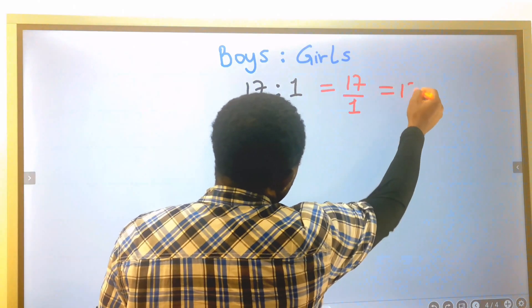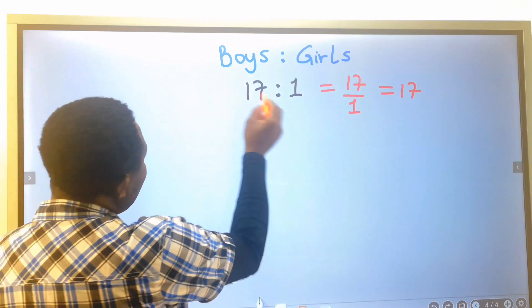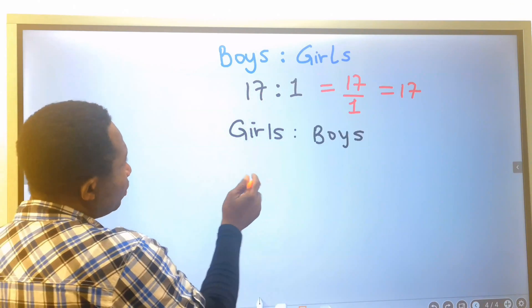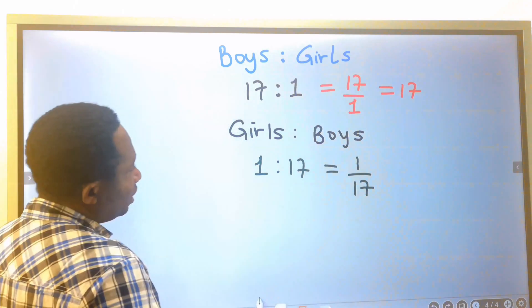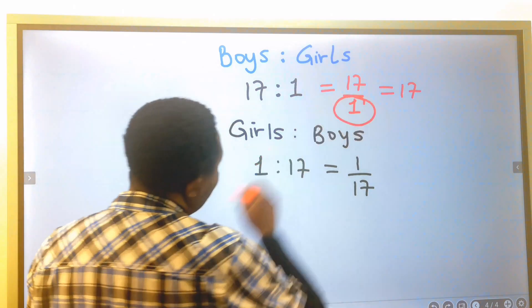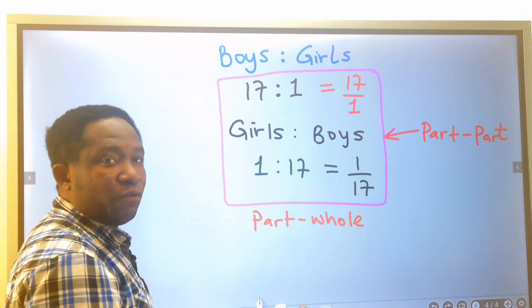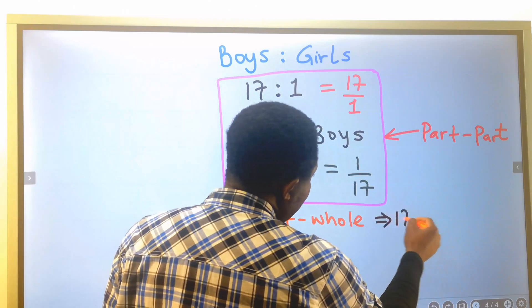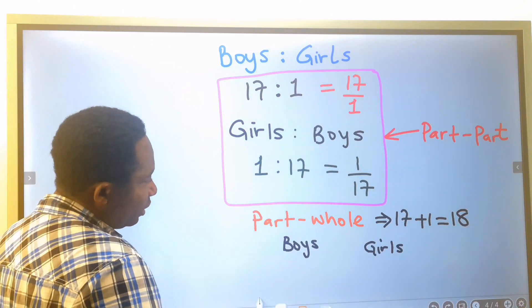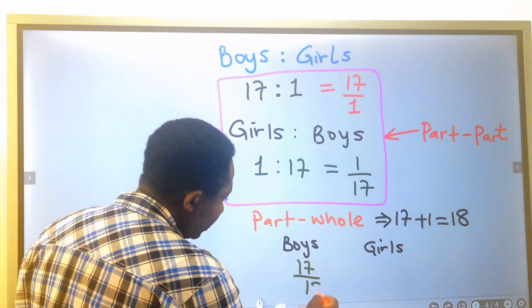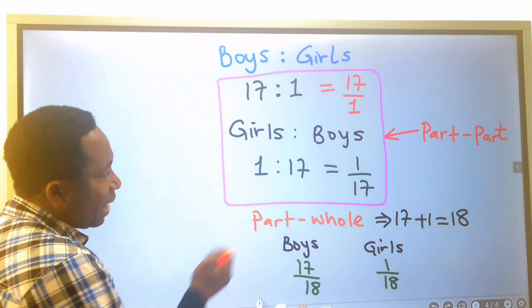When we have 17 over one, this can be represented as just 17 when dealing with part-to-part. But if the girls come first, we are going to have one to 17, which is the same as one over 17. For part-to-whole, we have 17 plus one, giving a total of 18 kids. The ratio of boys is 17 to 18, and for the girl it is one to 18.